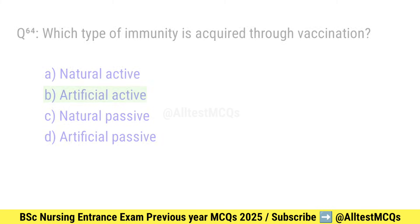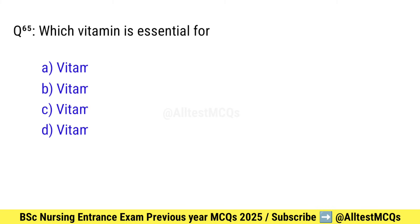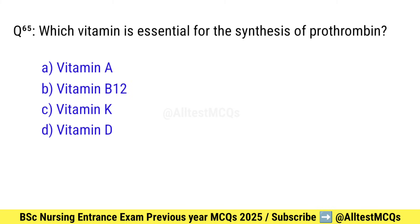Question number 65. Which vitamin is essential for the synthesis of prothrombin? Right option is C: Vitamin K.